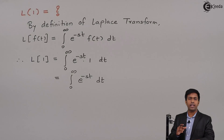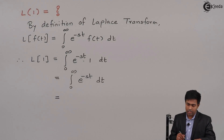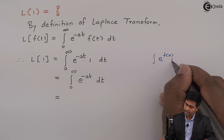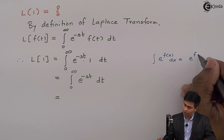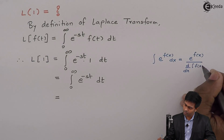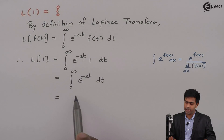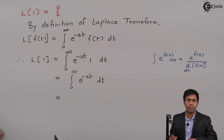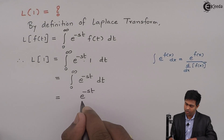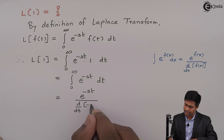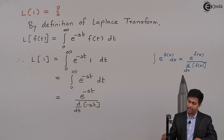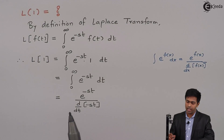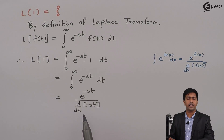Now let us integrate e raised to minus st with respect to t. We know that the integration of e raised to f(x) is given by the formula: e raised to f(x) upon the derivative of f(x). Comparing our step with this formula, here f(t) is minus st. Since we have integration with respect to t, I will find the derivative with respect to t — giving e raised to minus st upon d/dt of minus st.